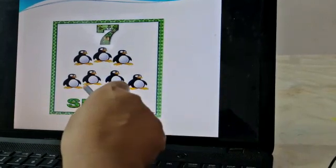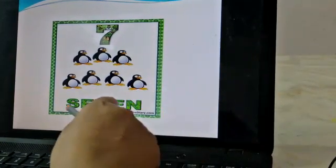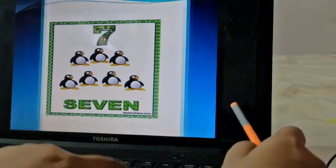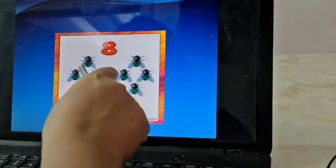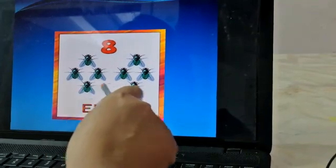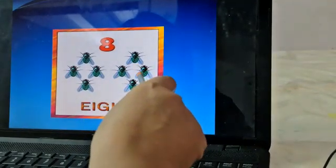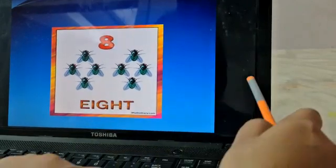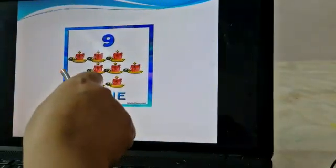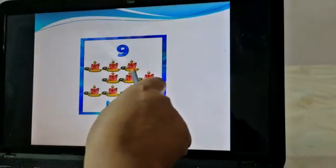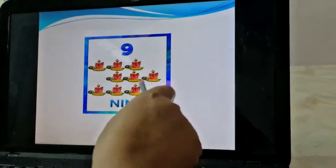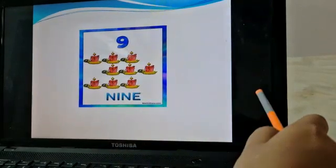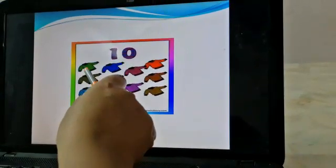Seven, S-E-V-E-N, seven. One, two, three, four, five, six, seven. Eight, E-I-G-H-T, eight. One, two, three, four, five, six, seven, eight. Nine, N-I-N-E, nine. One, two, three, four, five, six, seven, eight, nine.